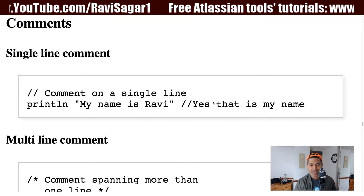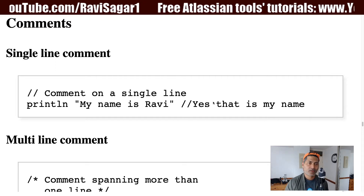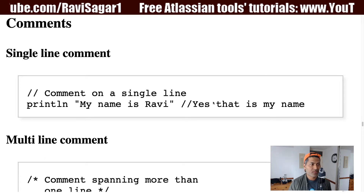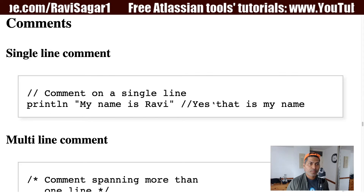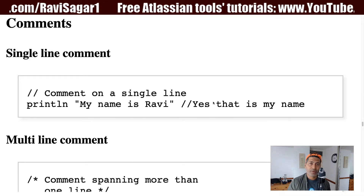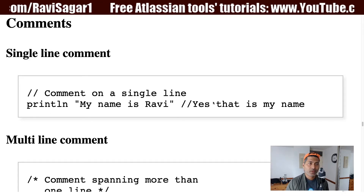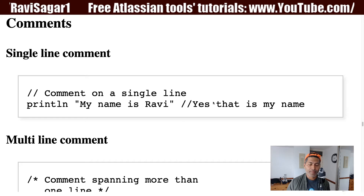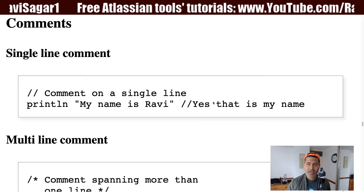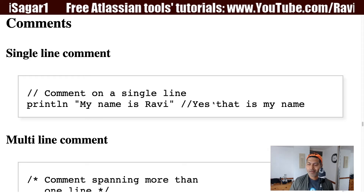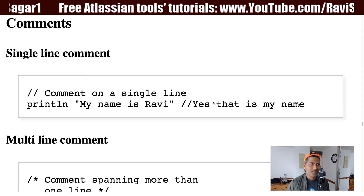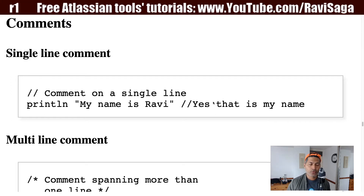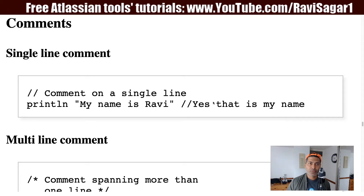Since we are talking about writing code, you will definitely encounter situations where you will have to write some comments. The purpose of comments is to basically explain what a particular piece of code is doing. Treat comments as statements that will not be processed by your compiler — when the program is run, these comments will be ignored.